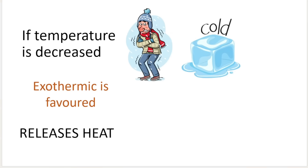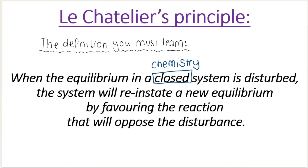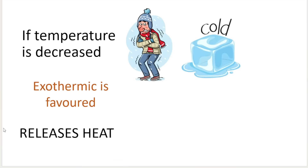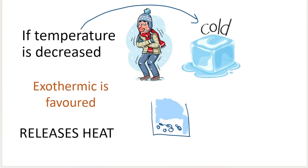If I decrease the temperature, according to Le Chatelier's principle — which states that when we disturb or interfere with equilibrium, the system does the opposite of what we do — decreasing temperature means I'm making it colder. The system wants to do the opposite of making cold, which is making hot. So the molecules will release heat because I made it cold; they want to make it hot. So they release heat, which means that the exothermic reaction is favored.